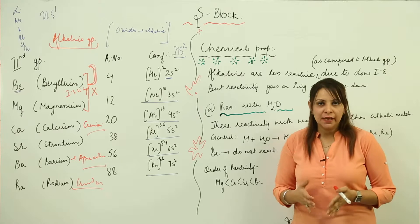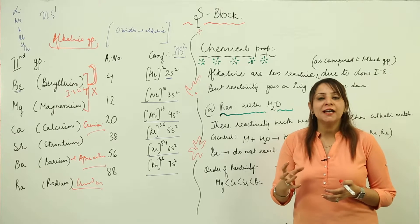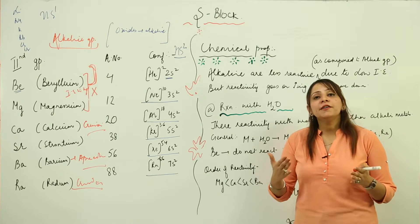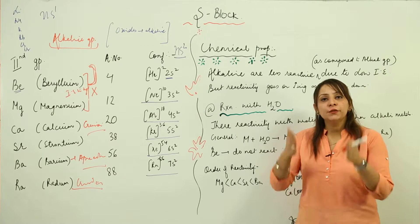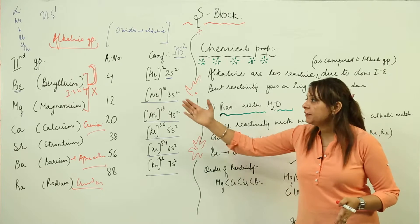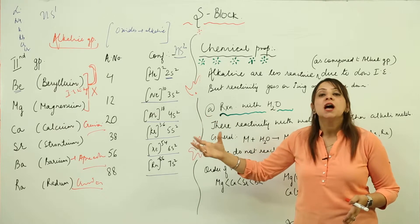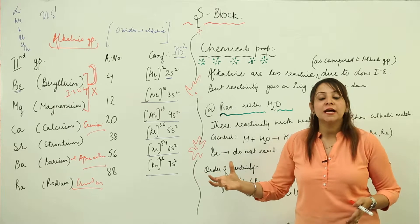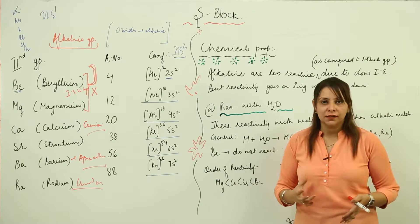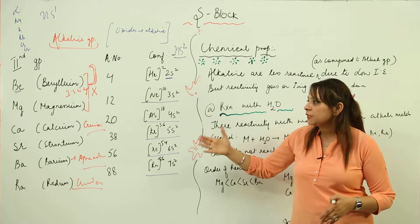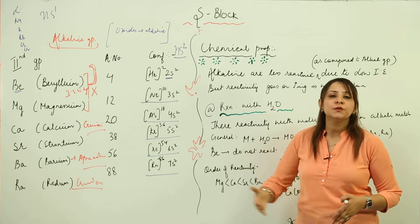The reason being is because they are smaller in size and comparatively they have high ionization energy. But as far as the reactivity is concerned within the group, as we move down we know that size is increasing, ionization energy is decreasing, and metallic character is increasing. So that means the reactivity is increasing. In the group, beryllium is going to be quite less reactive, and as we go down, the reactivity is increasing.